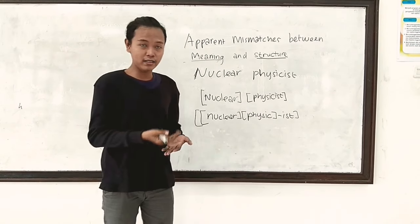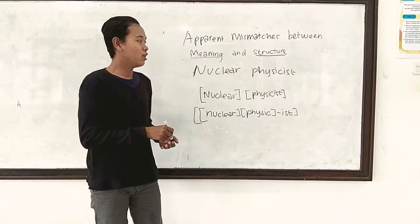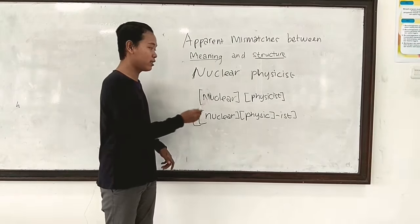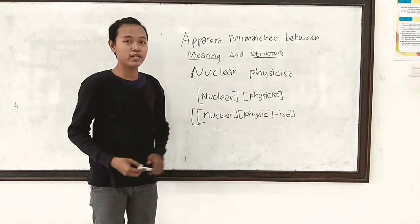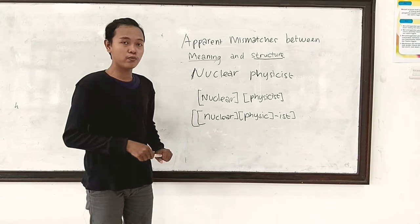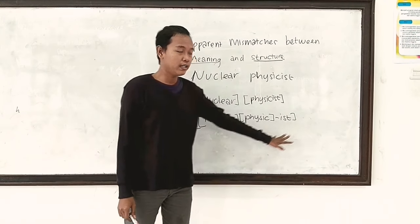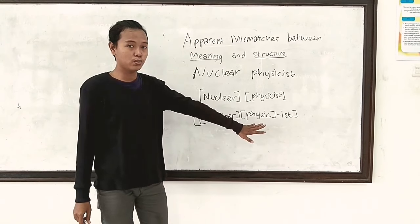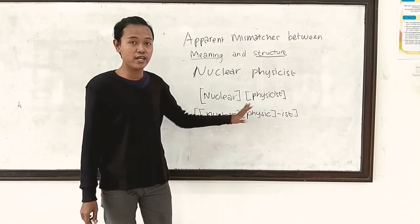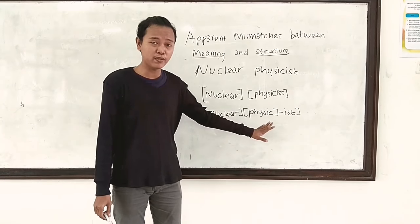Which one is the right answer? Is it a physicist who is nuclear, or an expert in nuclear physics? Now, if we follow the grammar structure, the meaning will be a physicist who is nuclear — which doesn't make sense, right? Therefore, we use brackets and parentheses. So we write it like this: the bracket is not attached to the word 'physics' alone, but instead it's attached to the whole phrase. Therefore, the meaning will be an expert in nuclear physics.